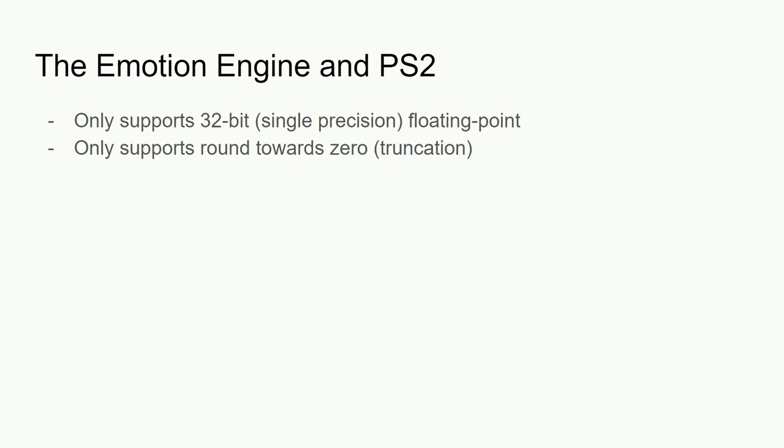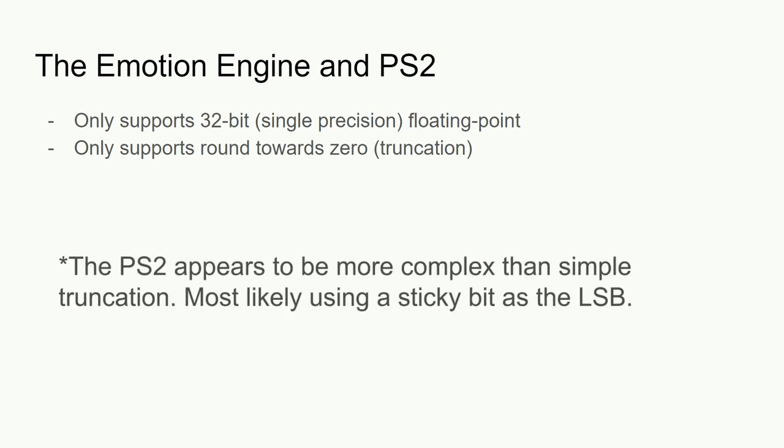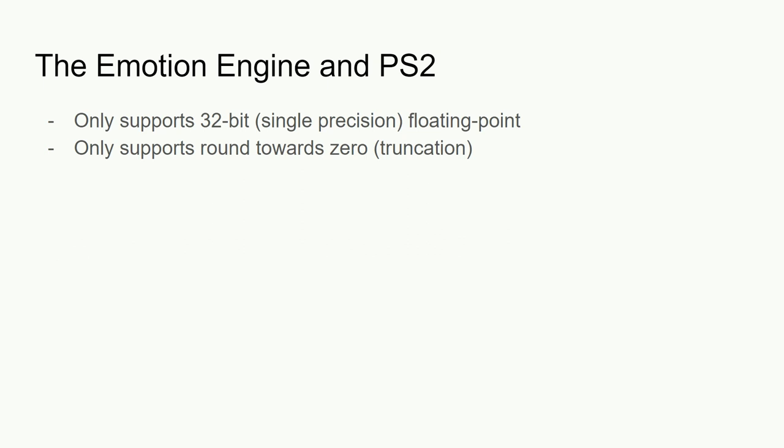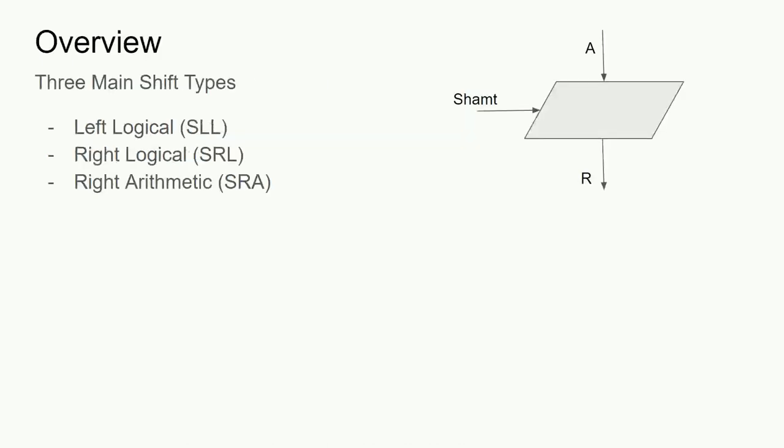This is because, unlike with the N64, the PlayStation 2 only supported single precision floating point and only supported round towards zero, which is effectively truncation. Essentially, implementations beyond a standard integer shifter are irrelevant, and the shifters used within the PlayStation 2 can be reduced further from 32 bits down to a width of 25 bits. These points should be kept in mind when looking at the implemented results.